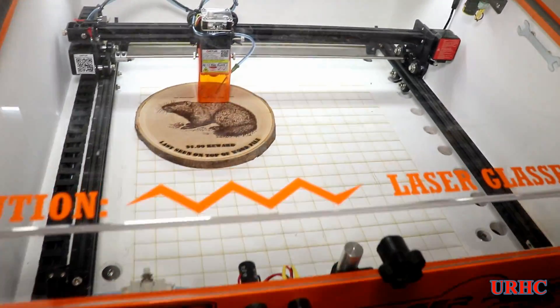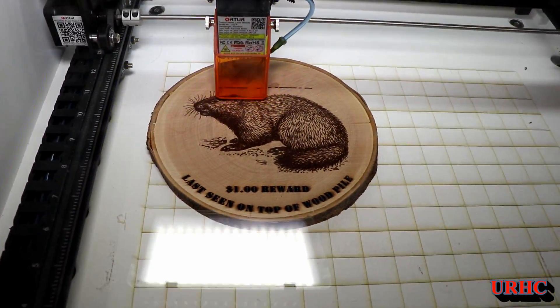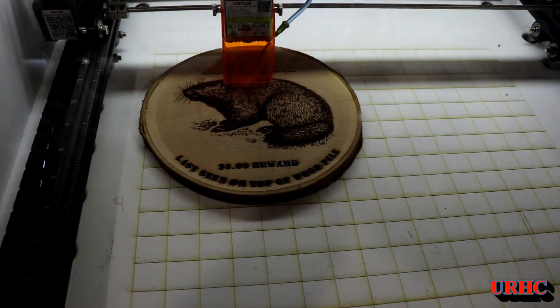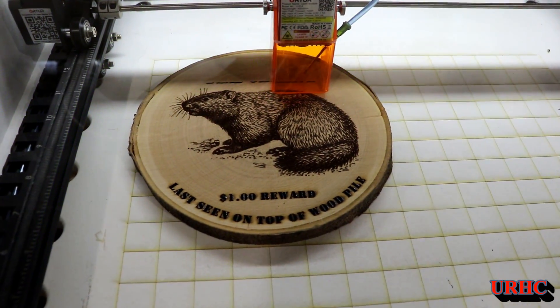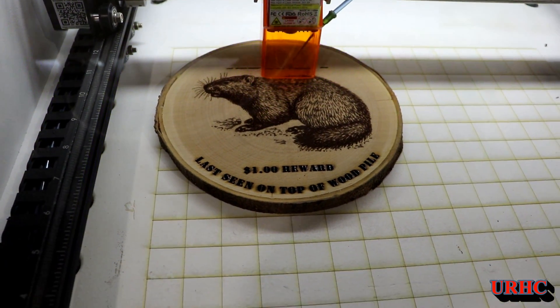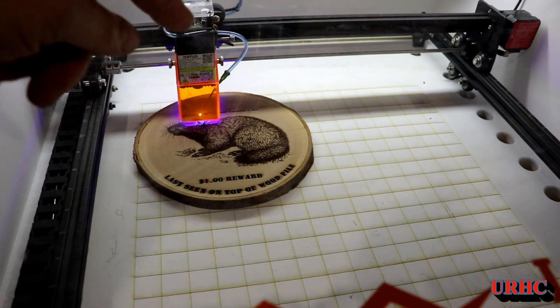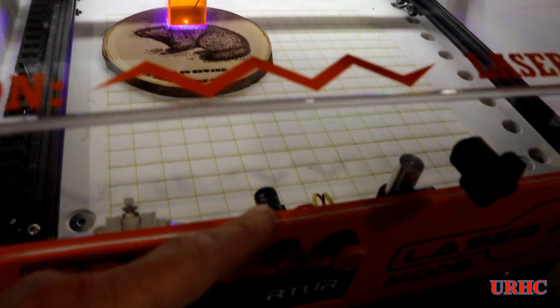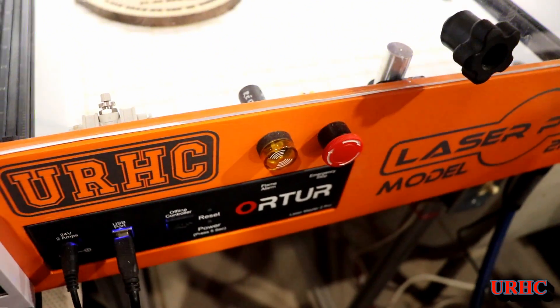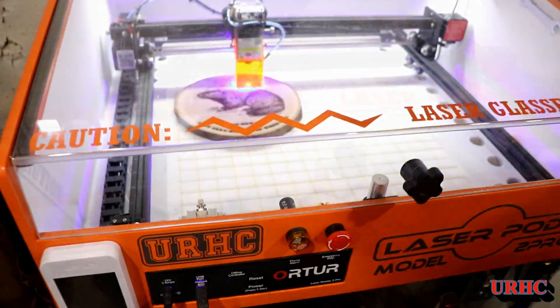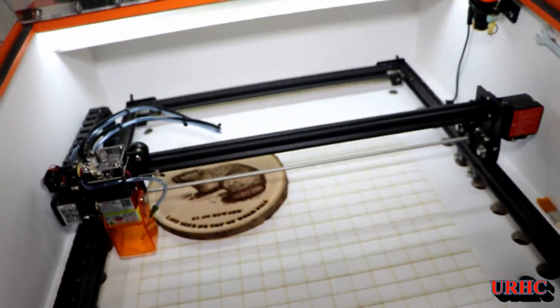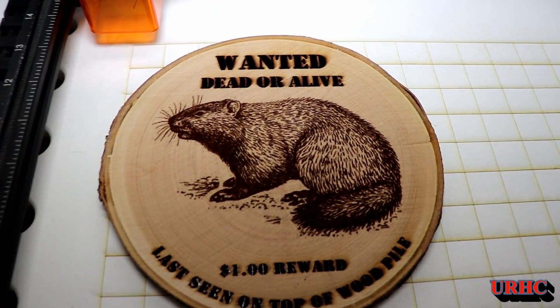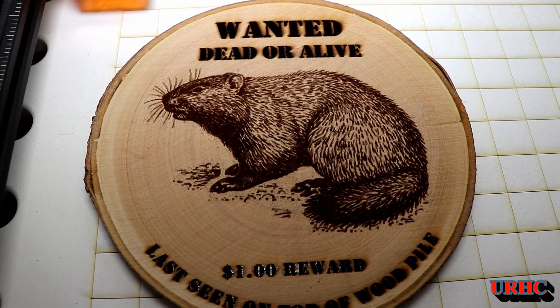I flipped it over and did my artwork on this side now. Here you can see I've got the settings on the text a little bit better now, but I don't have the air assist on. I wanted to get a little bit blacker burn on this cherry. You don't want the heavy burning to happen up in the front there, I'm finding out.